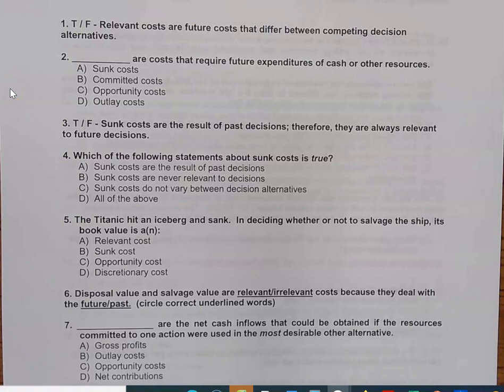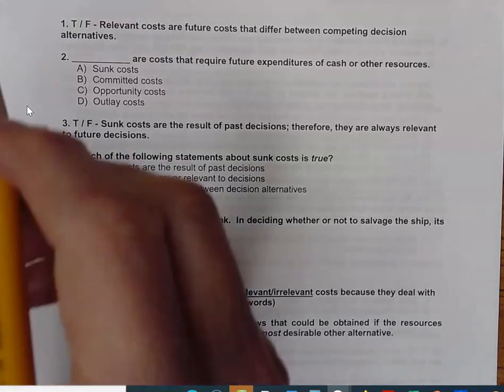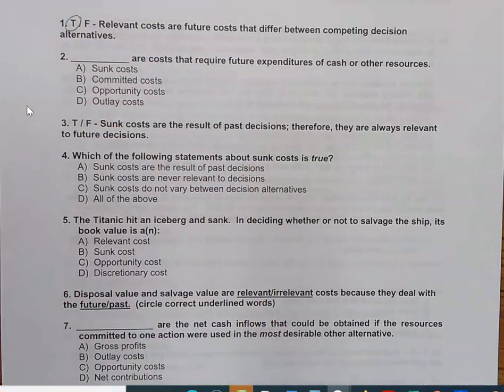They're still going to impact our bottom line, certainly, but for future decision-making purposes, they have no value. All right? So, let's just get right to it then with question number one, which is a true-false question. It says, relevant costs are future costs that differ among competing decision alternatives. And so, that is precisely what I just said. So, this is going to end up being a true statement. For a cost to be relevant, the first thing that we have to do is it has to be a future cost. This is absolutely critical.